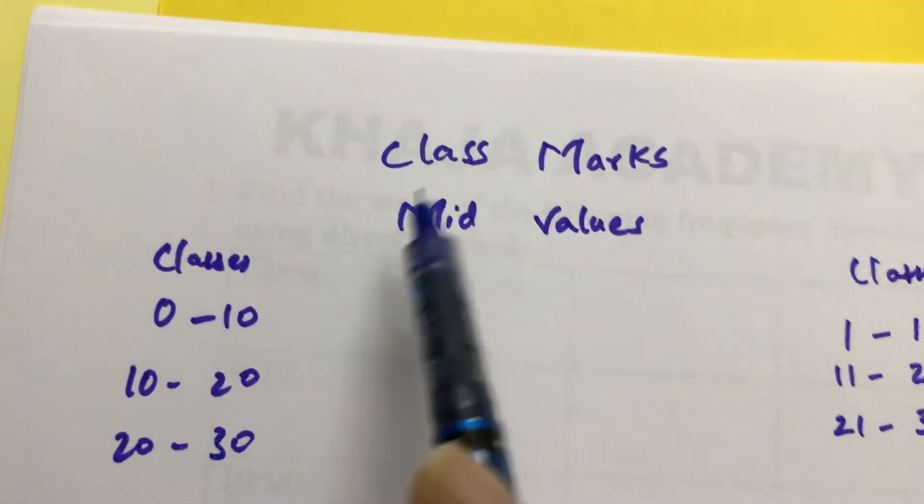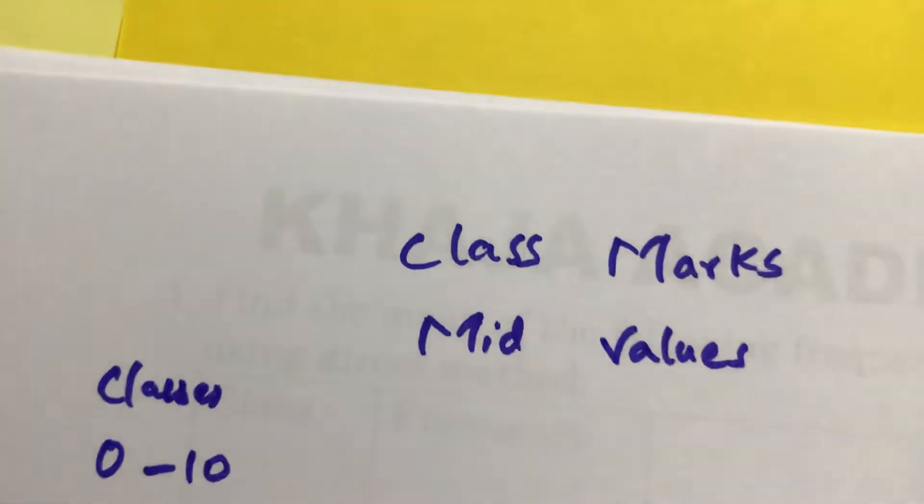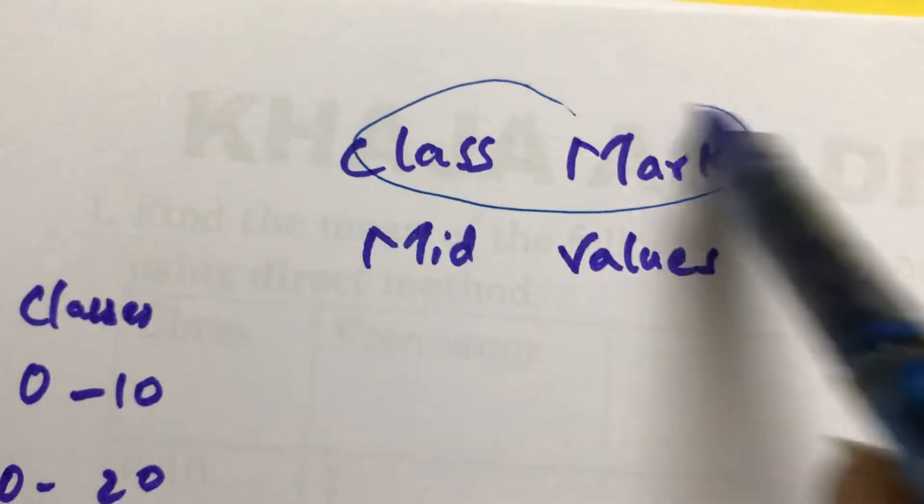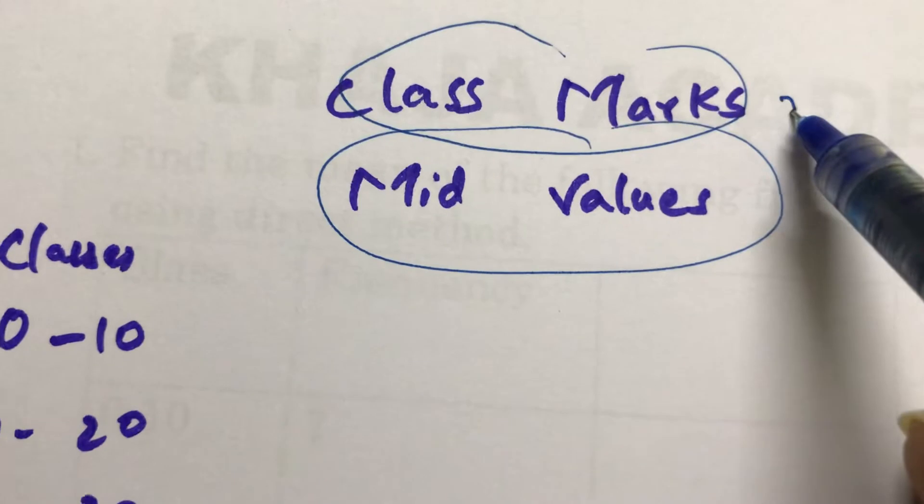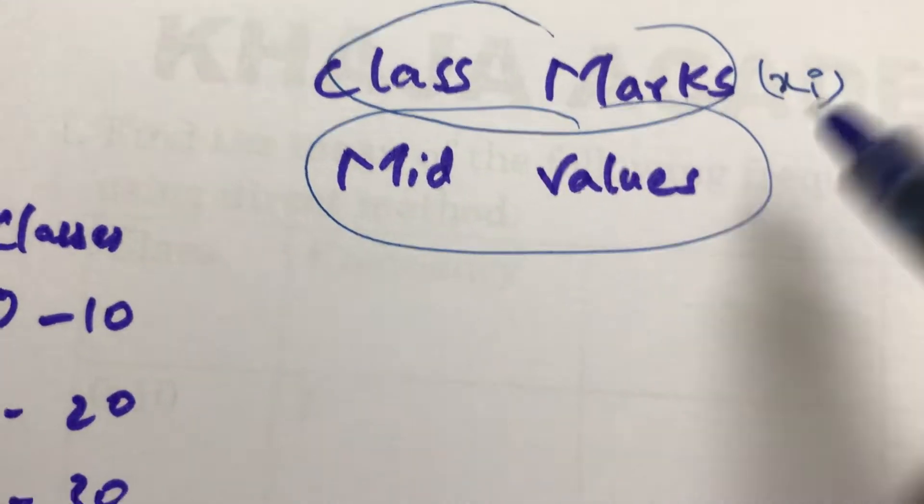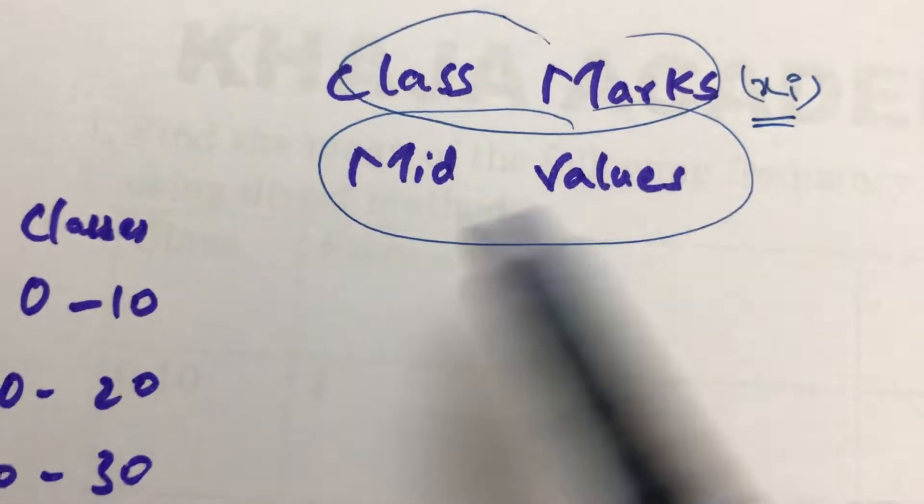Now I am going to explain about class marks. We will call it as class marks or mid values. Class marks, sometimes we will call mid values, are denoted by the symbol x_i.